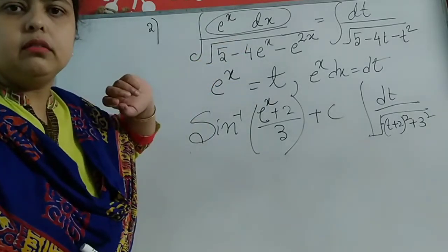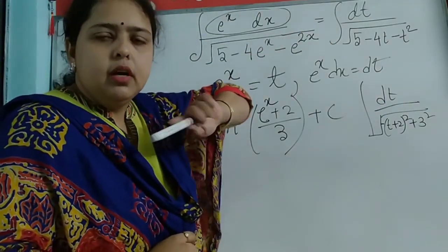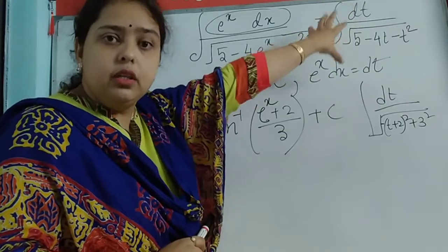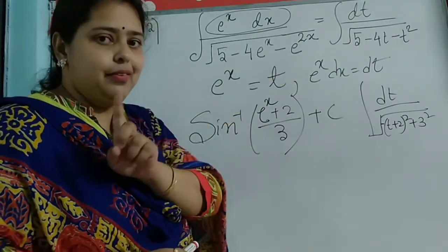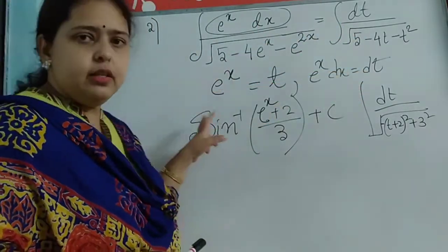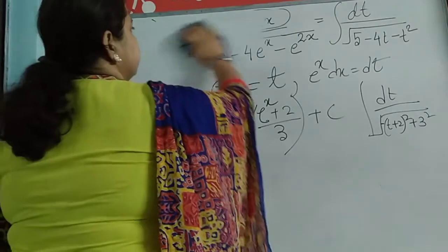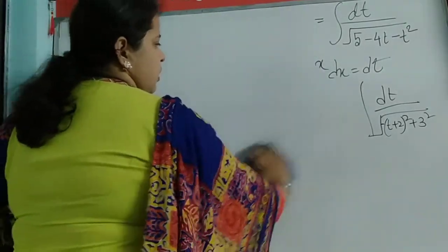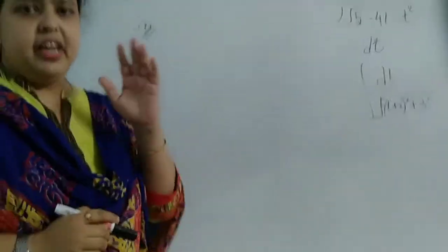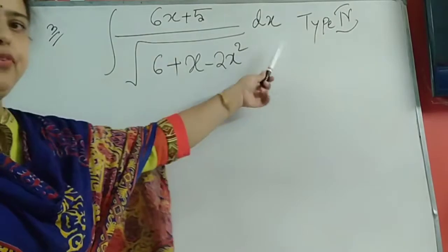Now what happens in the fourth type — when you still have something in the numerator and not only dt? For that I will give you one more problem where you have something in the numerator. In the third type we had only dt in the numerator under the square root. I am taking another problem now — let us begin with the third problem from type 4 category.